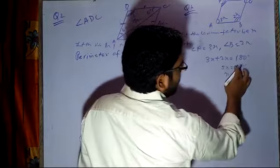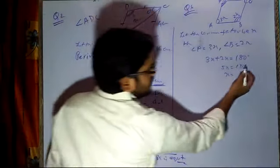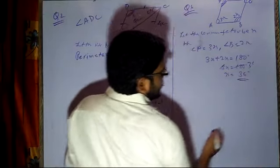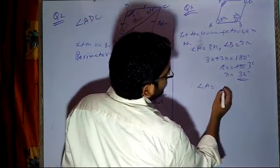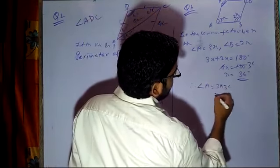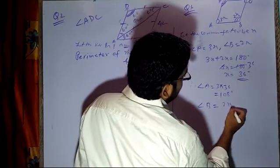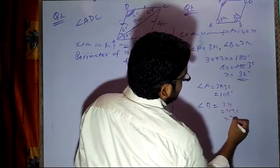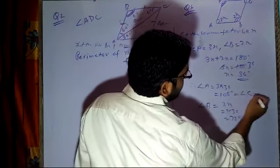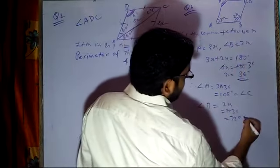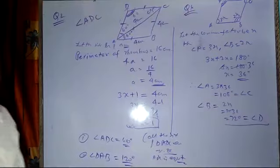Simplifying: 180 divided by 5 equals 36. Therefore, angle A = 3 × 36 = 108 degrees, and angle B = 2 × 36 = 72 degrees. Since opposite angles are equal, angle A equals angle C, so angle C = 108 degrees, and angle B equals angle D, so angle D = 72 degrees. You have now got all four angles of the given parallelogram.